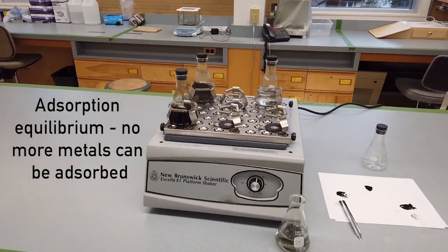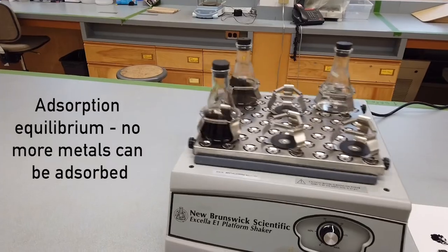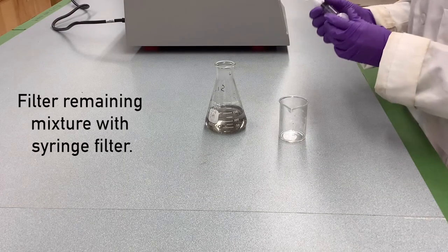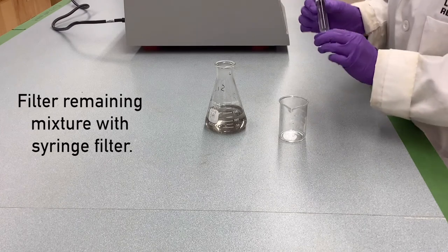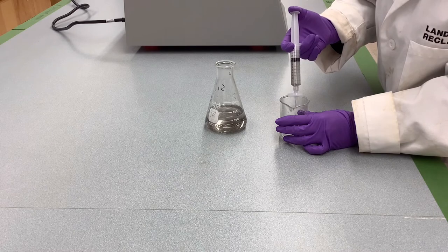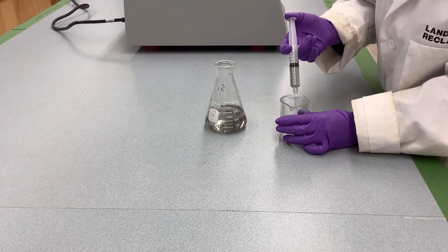This is when no more heavy metals can be adsorbed or attached to the material. Now, we filter the remaining mixture using a syringe filter. This removes all the remaining adsorbent particles from the liquid samples, as they might interfere with my following measurements.